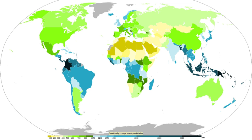Coalescence occurs when water droplets fuse to create larger water droplets, or when water droplets freeze onto an ice crystal, which is known as the Bergeron process. The fall rate of very small droplets is negligible, hence clouds do not fall out of the sky. Precipitation will only occur when these coalesce into larger drops. When air turbulence occurs, water droplets collide, producing larger droplets. Raindrops have sizes ranging from 0.1 mm to 9 mm mean diameter, above which they tend to break up.